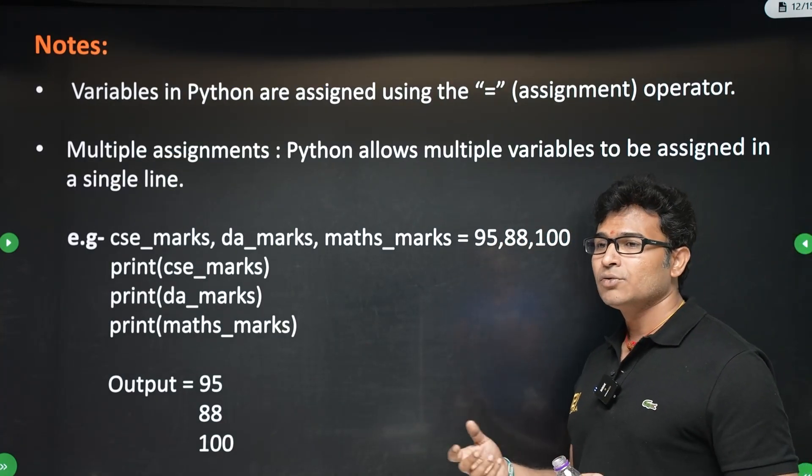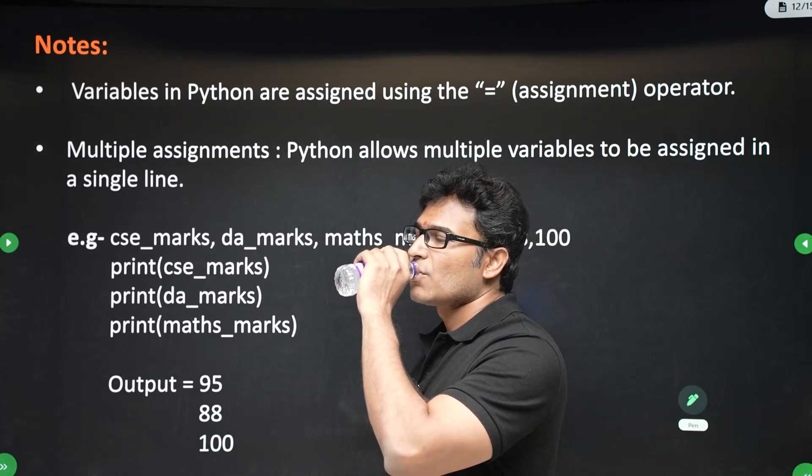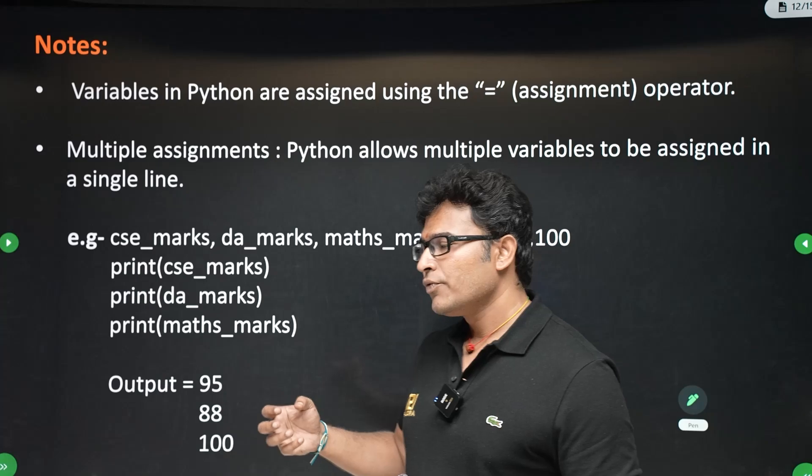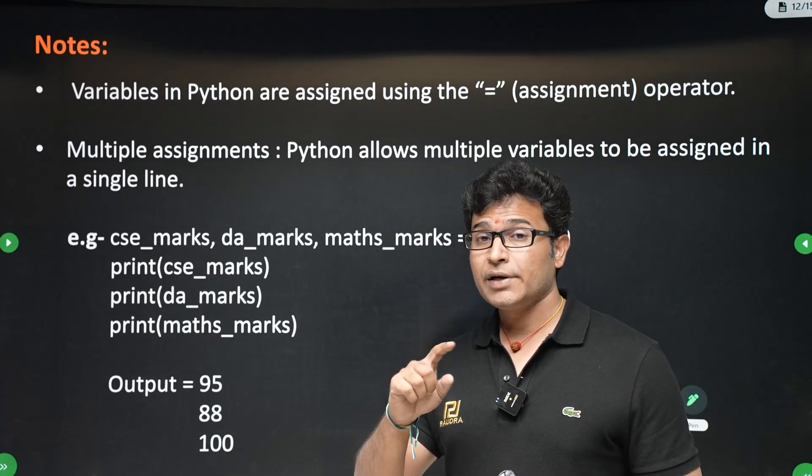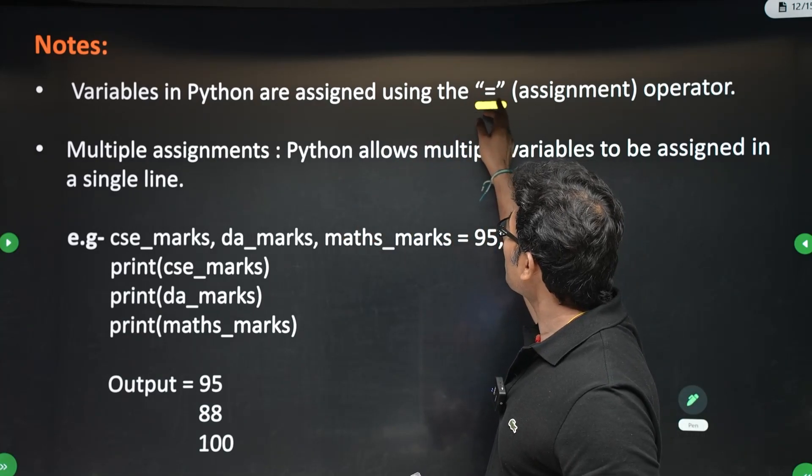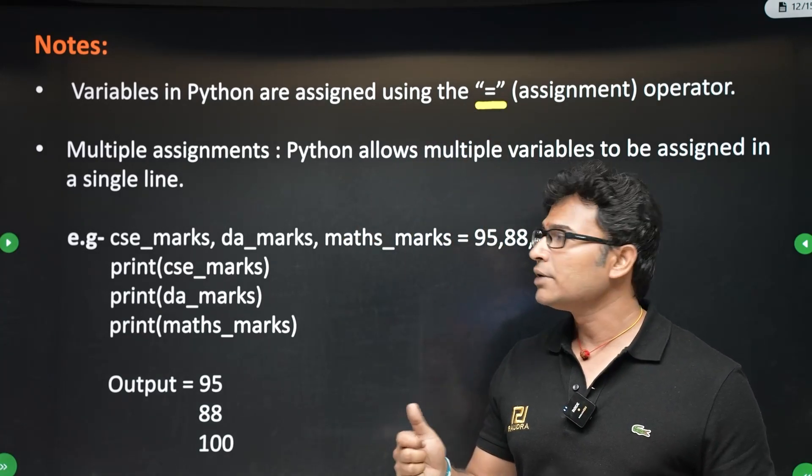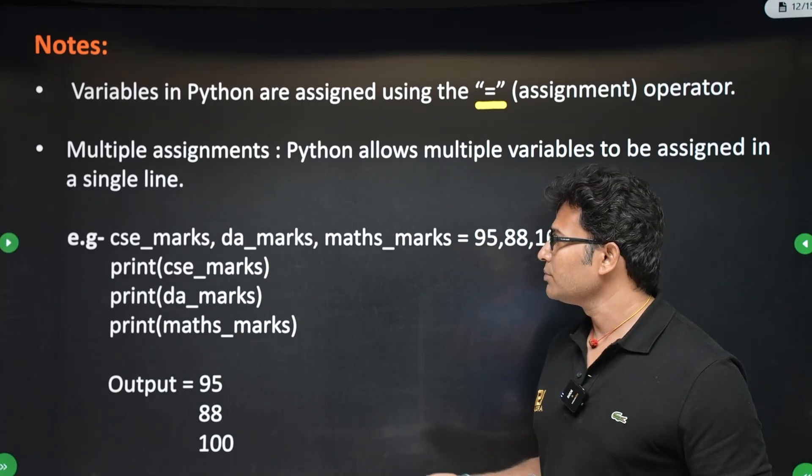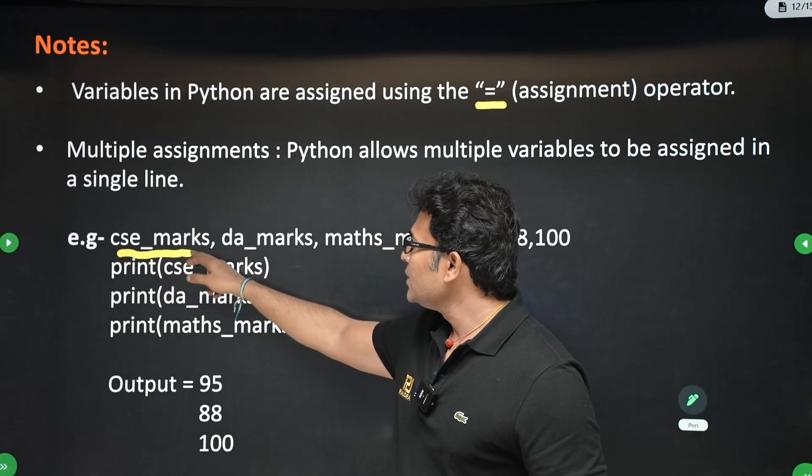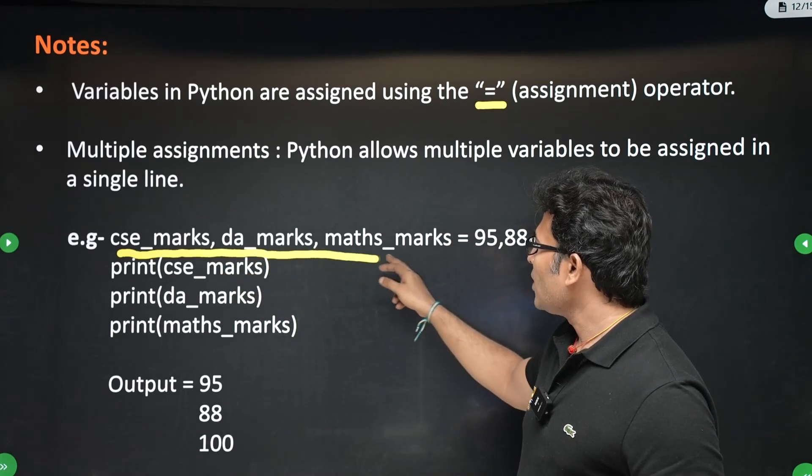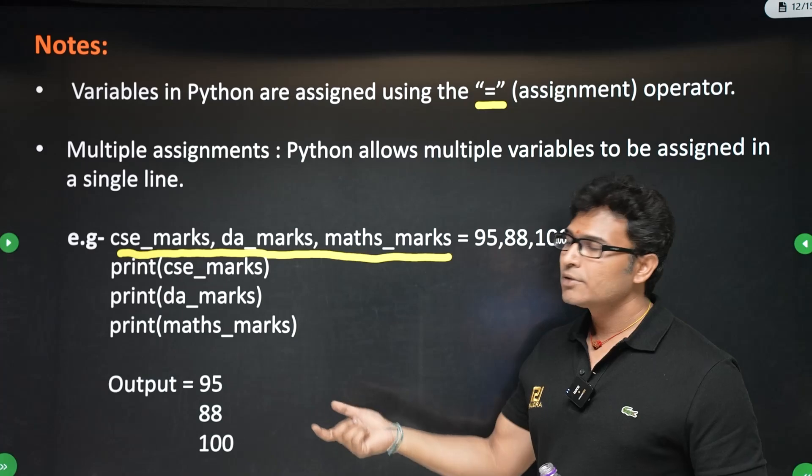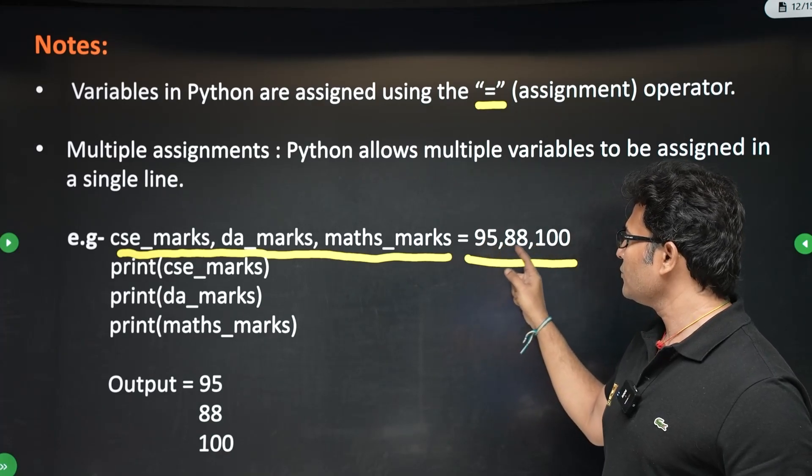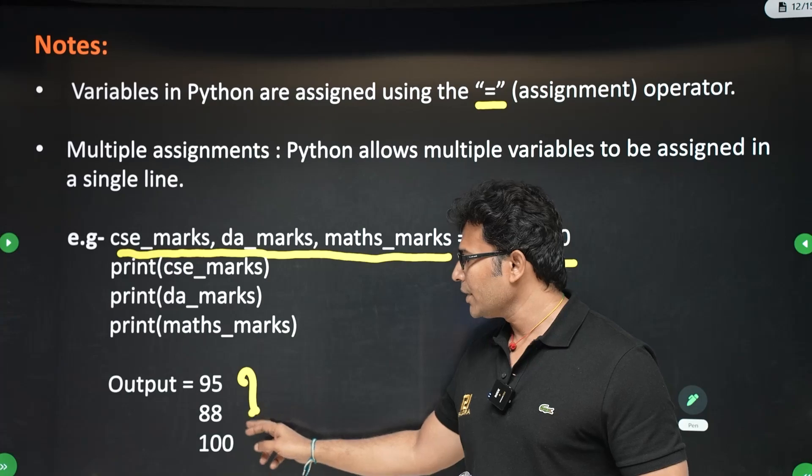And then how do you assign values to variables in Python? By using that equal assignment operator. So this equal is called assignment operator. You can also do multiple assignments in the same line in Python. For example, you can assign CSE_marks, DA_marks and math_marks. You can assign all the three variables in just one line by writing like this. You are separating them by comma and values are separated by comma: 95, 88 and 100. Now, if you print them, you are going to get this.